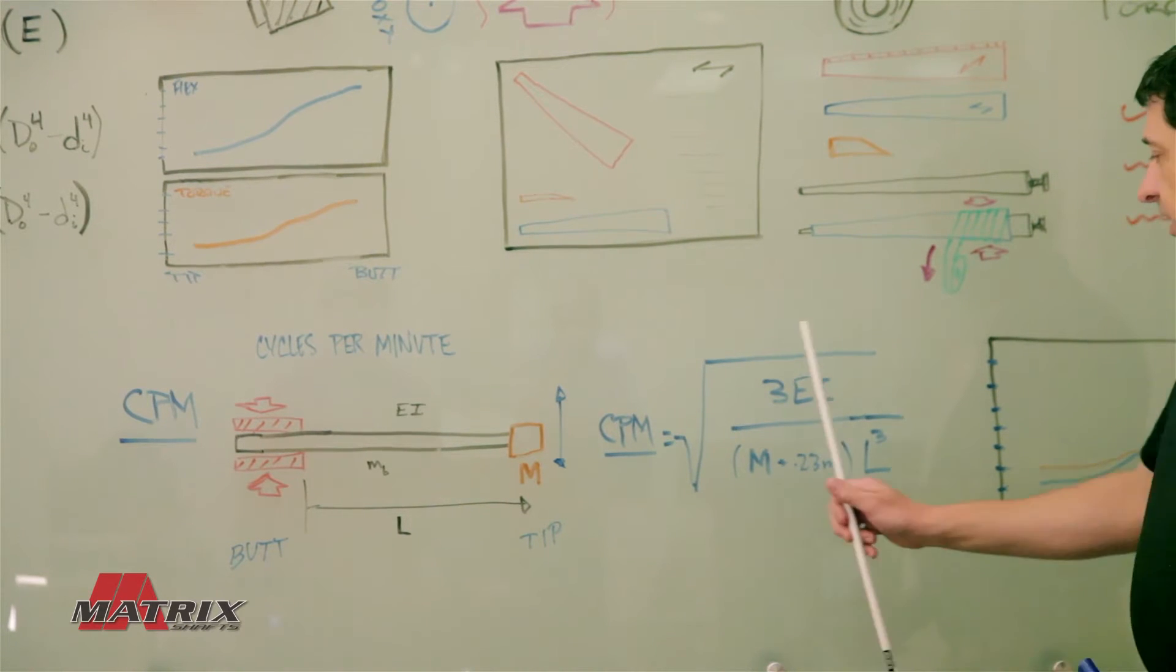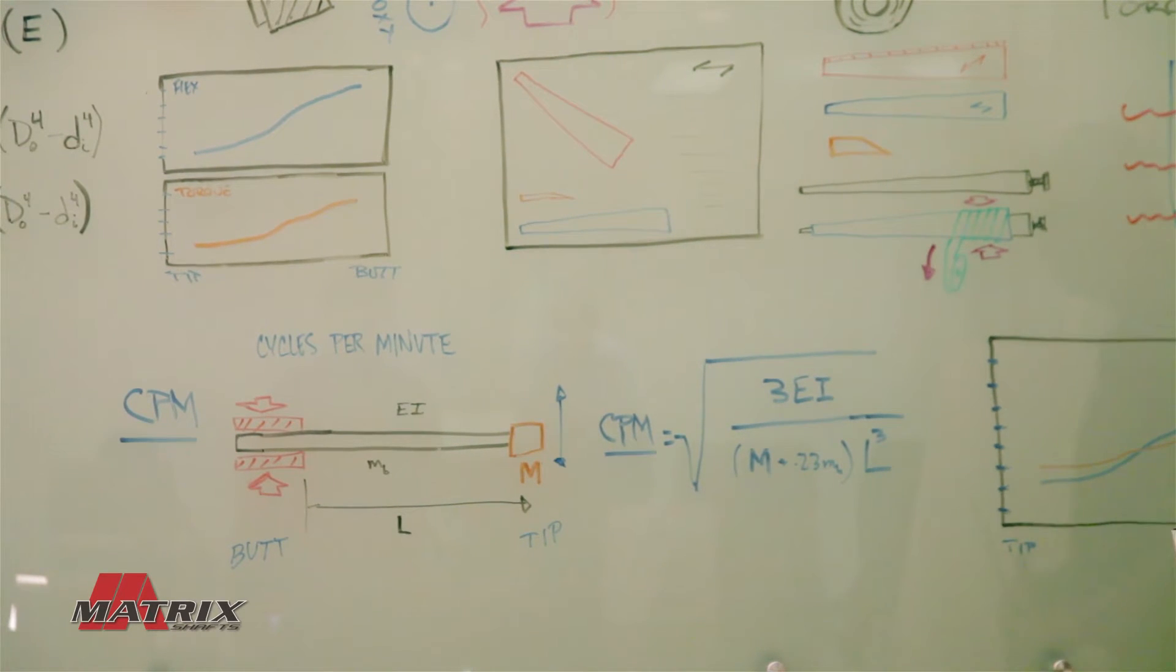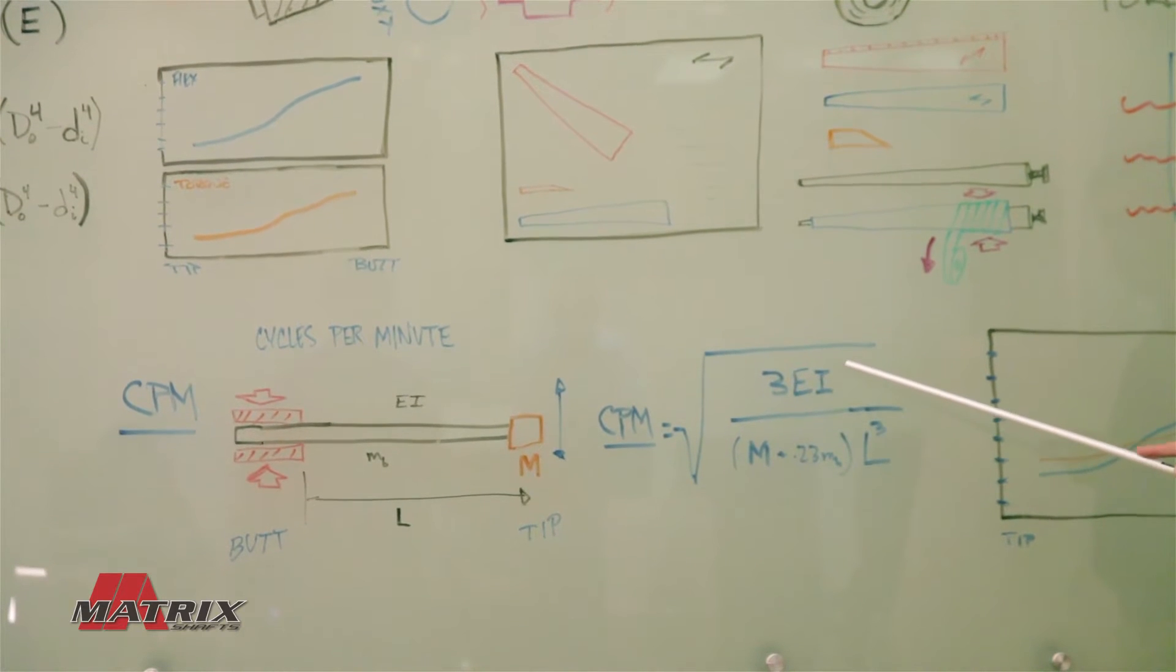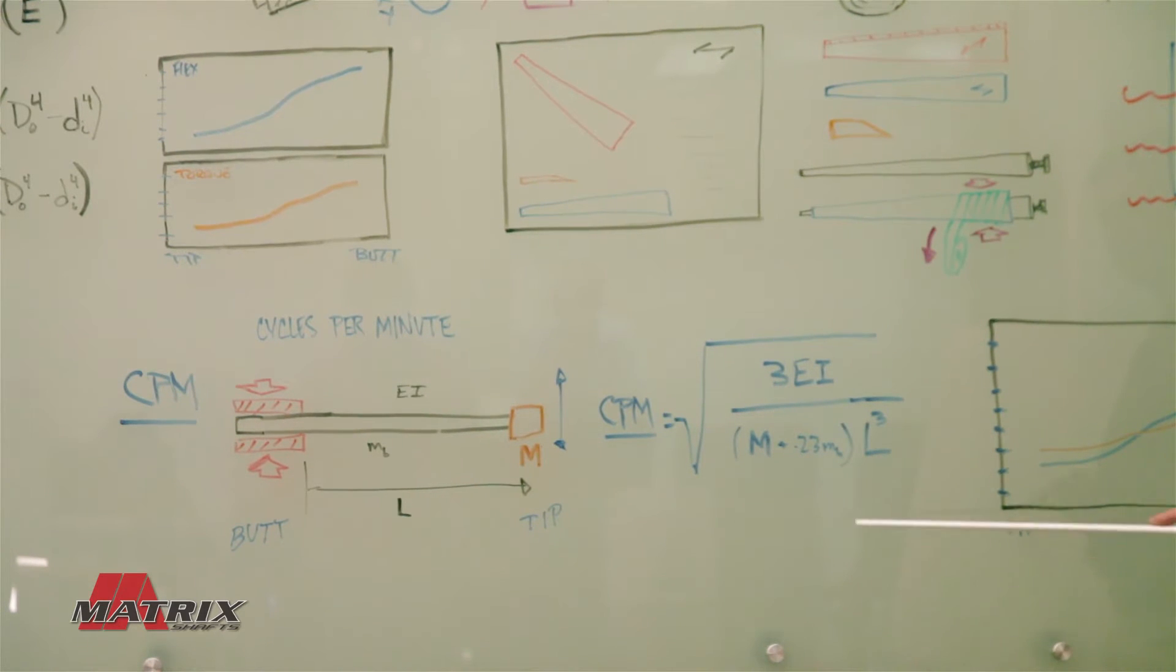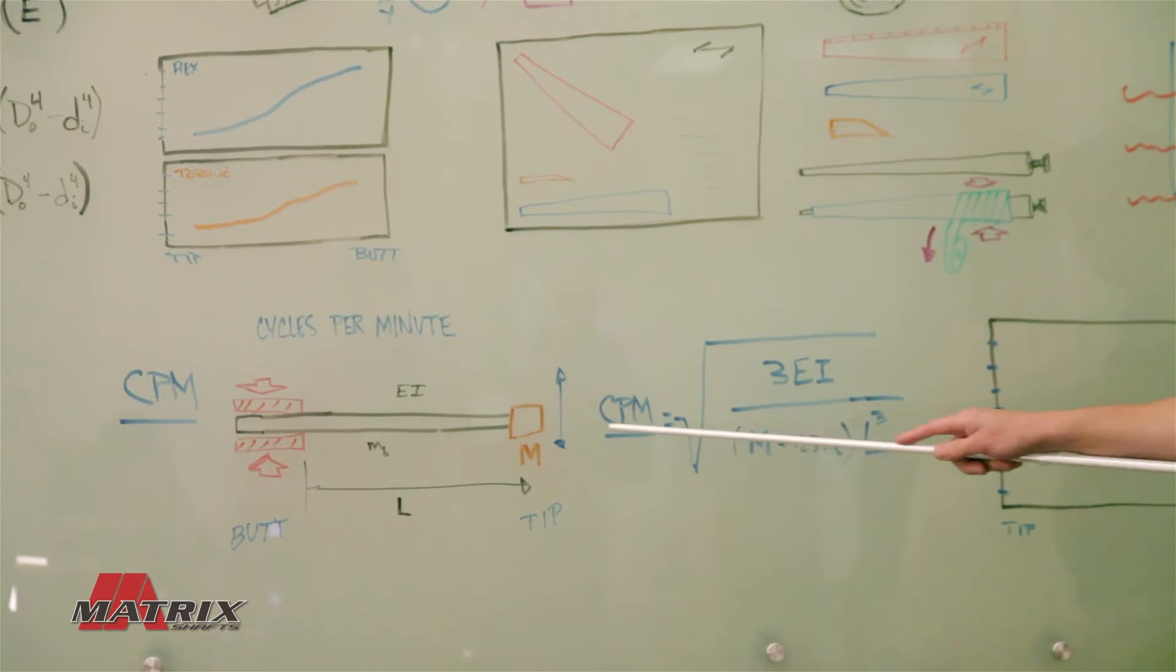Now the equation to calculate that is right here. On top you see you have your EI, which is your section stiffness of the shaft. You have your mass of the large weight on the end. The mass of the shaft itself contributes a small degree, but your largest influence is the length of the shaft.